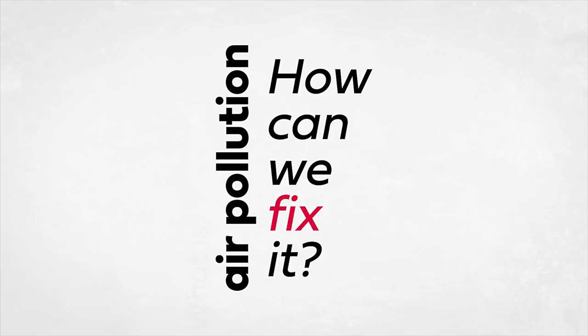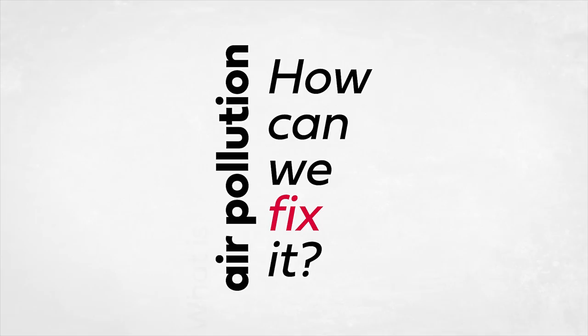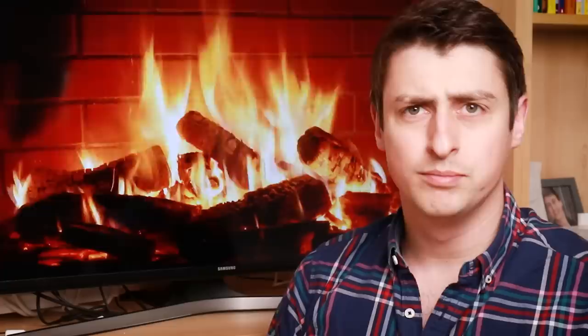So what is air pollution? How does it affect us? And how can we fix this problem? Firstly, it's important to draw a distinction between indoor and outdoor air pollution. Indoor air pollution is caused by the burning of solid fuels, such as coal, charcoal, wood, even dung, for cooking and for heating indoors.